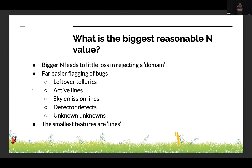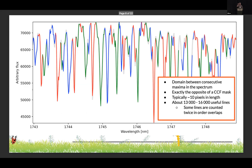To flag these little bugs — there won't be just three, there'll be ten — you go to the smallest features, which we call lines. It's a liberal definition of a line: basically the domain between two consecutive local maxima. In SPIRou, a line could span one line in one order. If you have a defect on your detector at a given line at 1.6 micron and you see it twice, it counts as two lines. We have between 13,000 and 16,000 useful lines in the SPIRou domain.